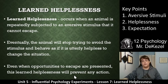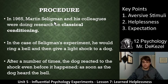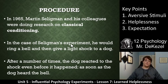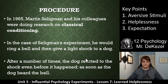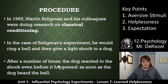In 1965, Martin Seligman and his colleagues were doing research on classical conditioning — essentially on learning. In Seligman's experiment, he would ring a bell and then give a dog a light shock, very similar to Pavlov's experiment but quite a bit meaner. After a number of repetitions, as you'd expect, the dog reacted to the shock even before it happened. As soon as the dog heard the bell, it would prepare for the shock, having learned to associate the bell with the shock coming soon after.